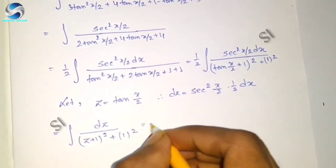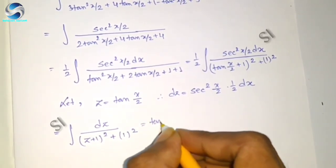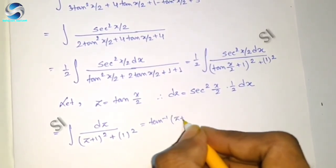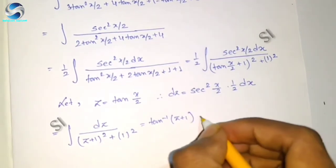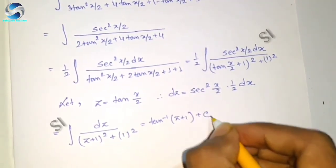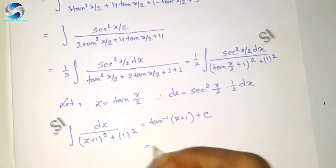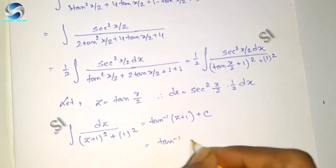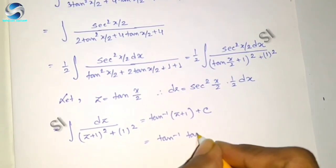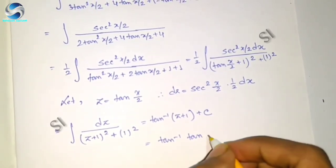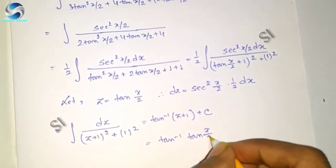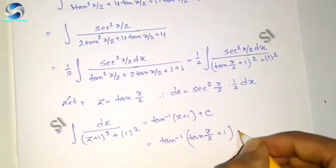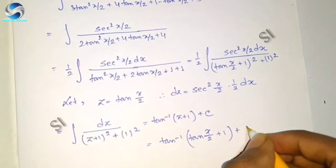That equals tan inverse of (z + 1) plus C, which equals tan inverse of (tan(x/2) + 1) plus C.